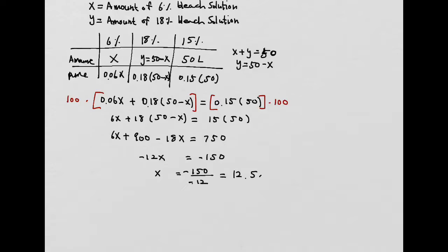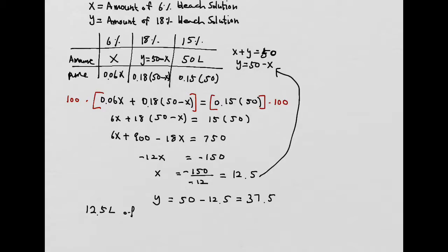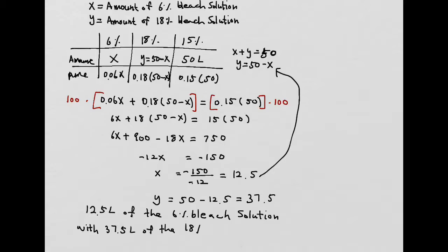Replacing x = 12.5 to find y: y = 50 − 12.5 = 37.5. So you need 12.5 liters of the 6% bleach solution mixed with 37.5 liters of the 18% bleach solution to make 50 liters of 15% solution.